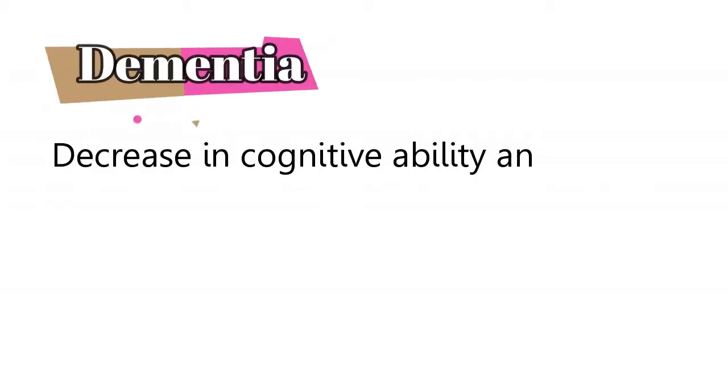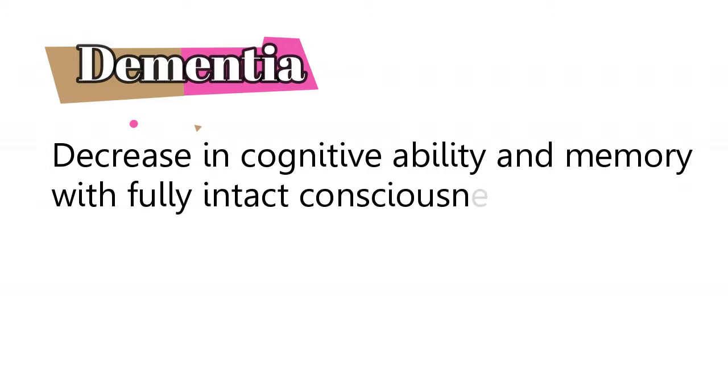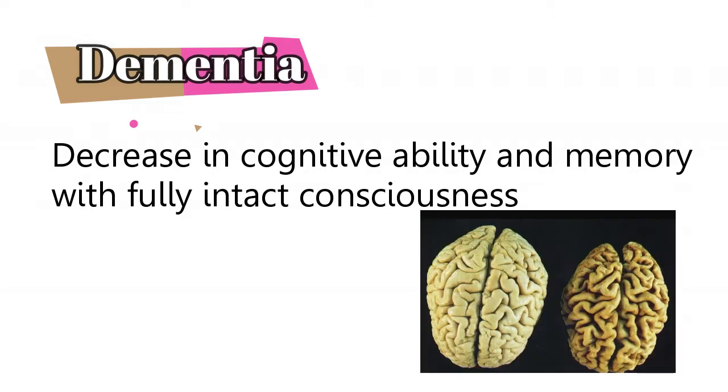Dementia is decreased cognitive ability and decreased memory with fully intact consciousness. So the patient doesn't know what you're saying, he cannot understand you well, he forgets things a lot, but he's fully aware of what's going around him. In almost all types of dementia there is widespread cortical atrophy with narrow gyri and wide sulci.